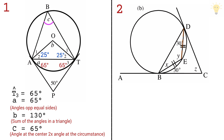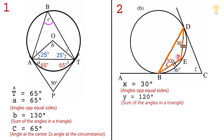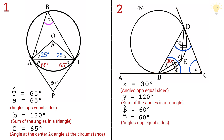In example 2, DE equals BE so this is an isosceles triangle and the base angles are equal, giving x equal to 30 degrees. The triangle angle sum gives y equal to 180 minus 30 minus 30 equals 120 degrees. The two tangents from the same external point are equal, so the corresponding angles are equal: 30 plus 30 is 60 degrees. Using the triangle angle sum again, the remaining angle is 180 minus 60 minus 60 equals 60 degrees.